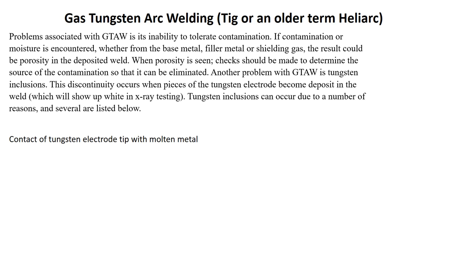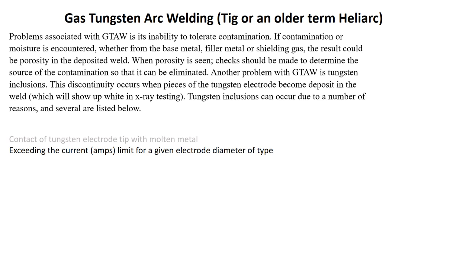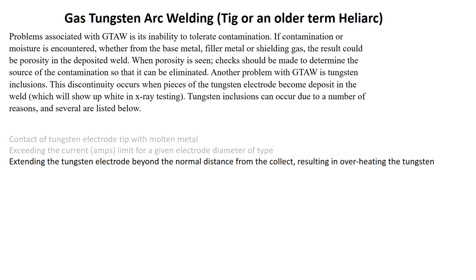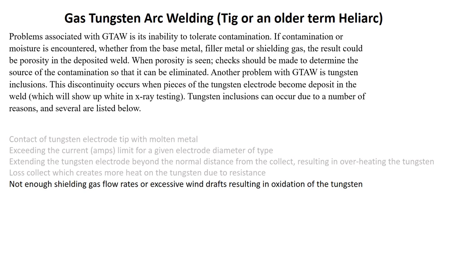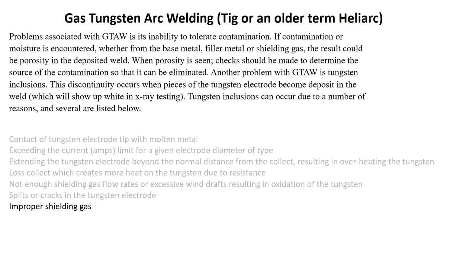Causes of tungsten inclusion include: contact of the tungsten electrode tip to the molten metal; exceeding the current or amperage limit for a given electrode diameter or type; extending the tungsten electrode beyond the normal distance from the collet, resulting in overheating the tungsten; a loose collet, which creates more heat on the tungsten due to resistance; not enough shielding gas flow rate or excessive wind drafts, resulting in oxidation of the tungsten; splits or cracks in the tungsten electrode; improper shielding gas; and improper grinding of the tungsten electrode. There are also other factors that can cause problems.